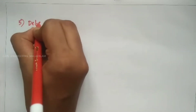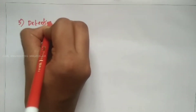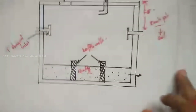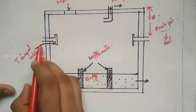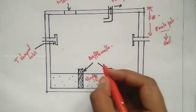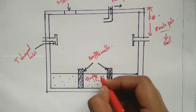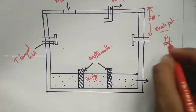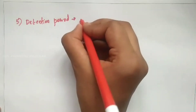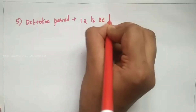The fifth design consideration is the detention period. This is the time that wastewater stays between the inlet and outlet, allowing sludge to deposit. The detention period is 12 to 36 hours, and generally 24 hours is provided.